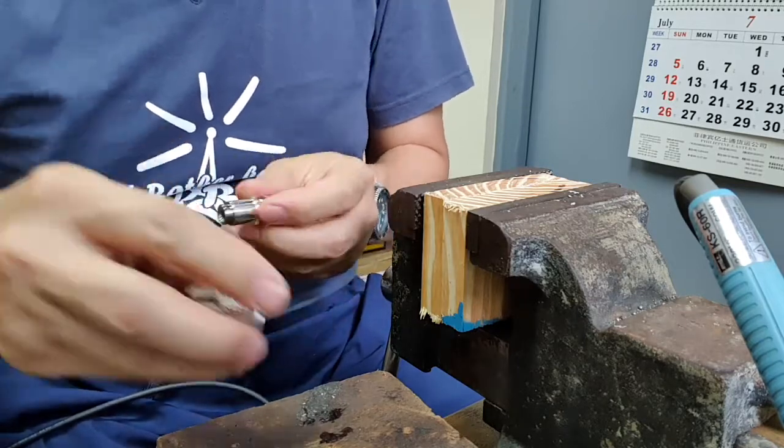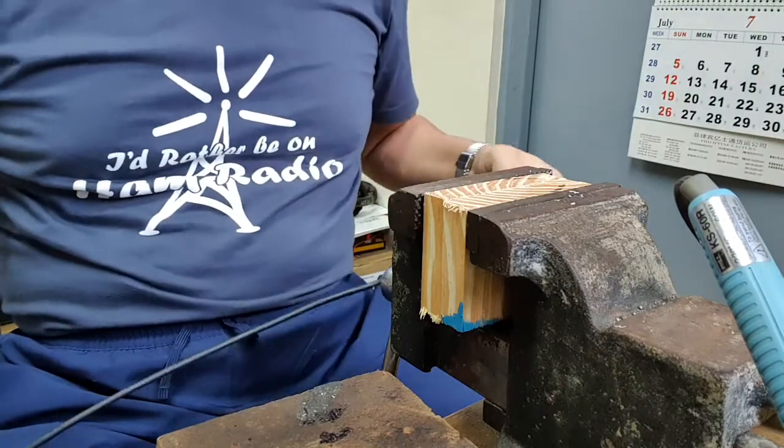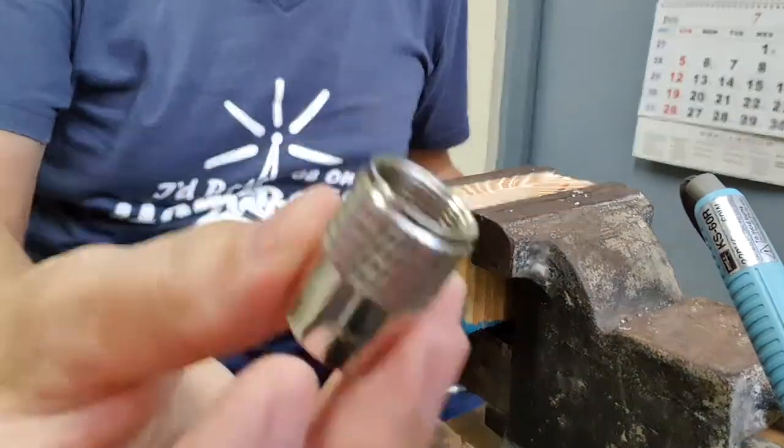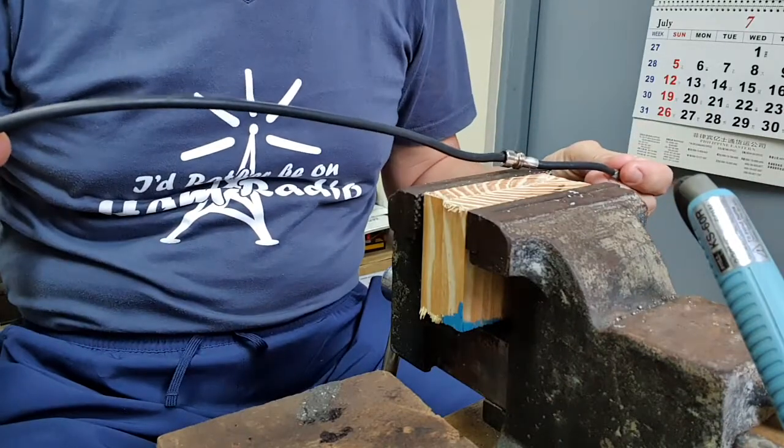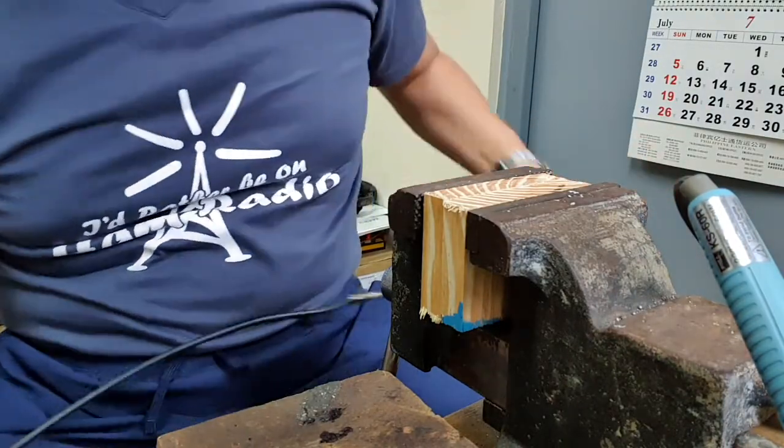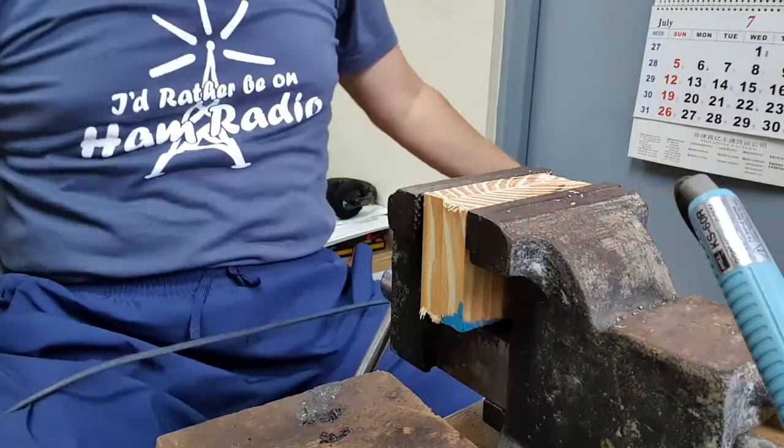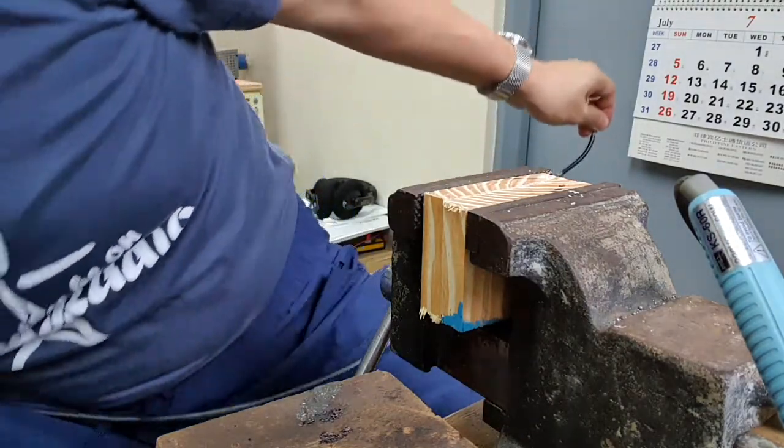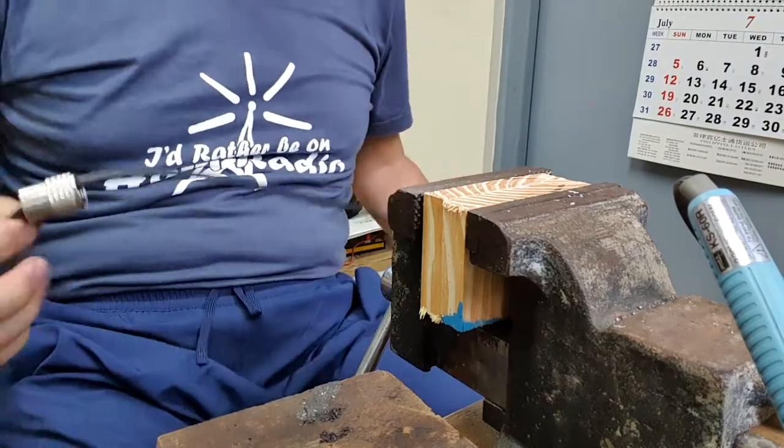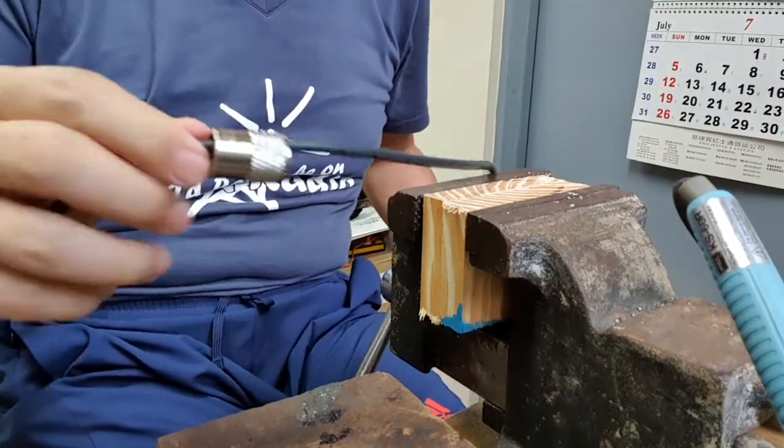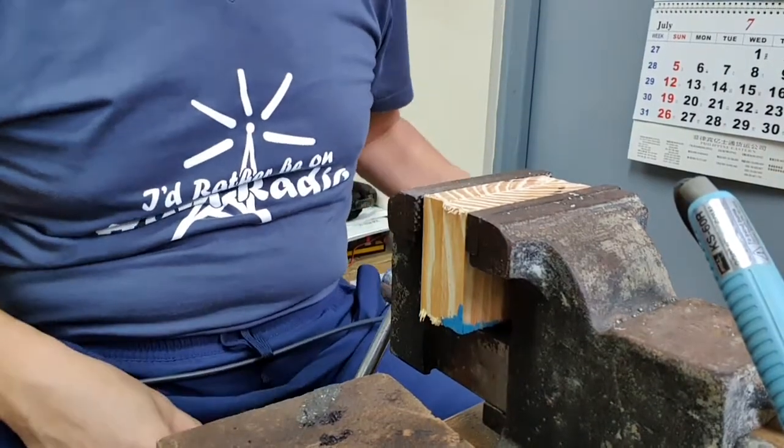First thing that I do is make sure that the sleeve is inserted to the coax before working on it. This is very important that you do not forget this, so the sleeve goes in first.